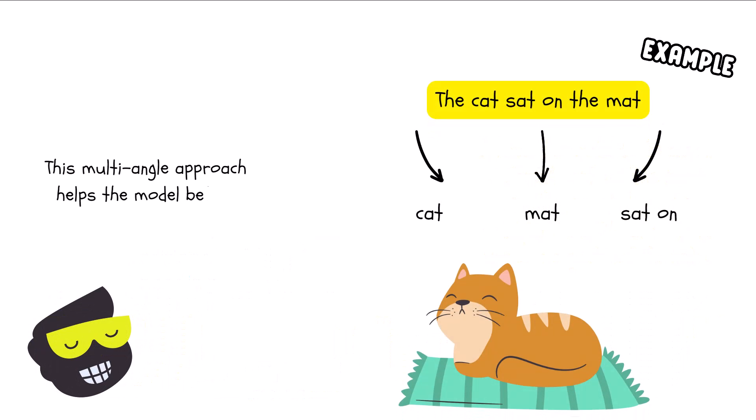For example, consider a sentence like, the cat sat on the mat. One head might focus on the relationship between cat and mat to understand the context, while other head might focus on the sequence sat on the to grasp the attention taking place. This multi-facet approach allows the model to capture various patterns and relationships within the data.